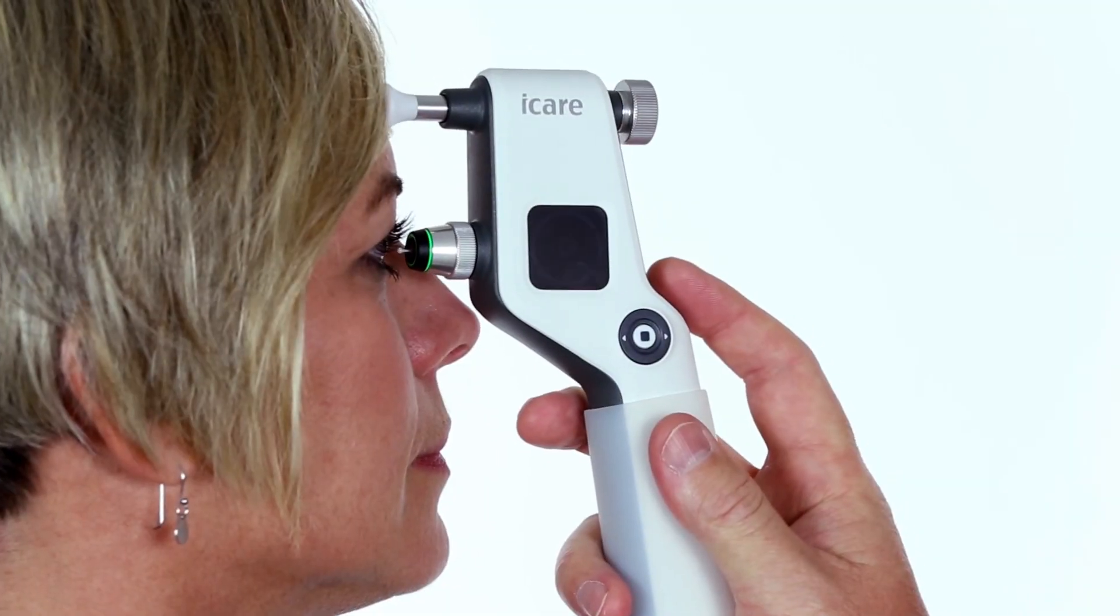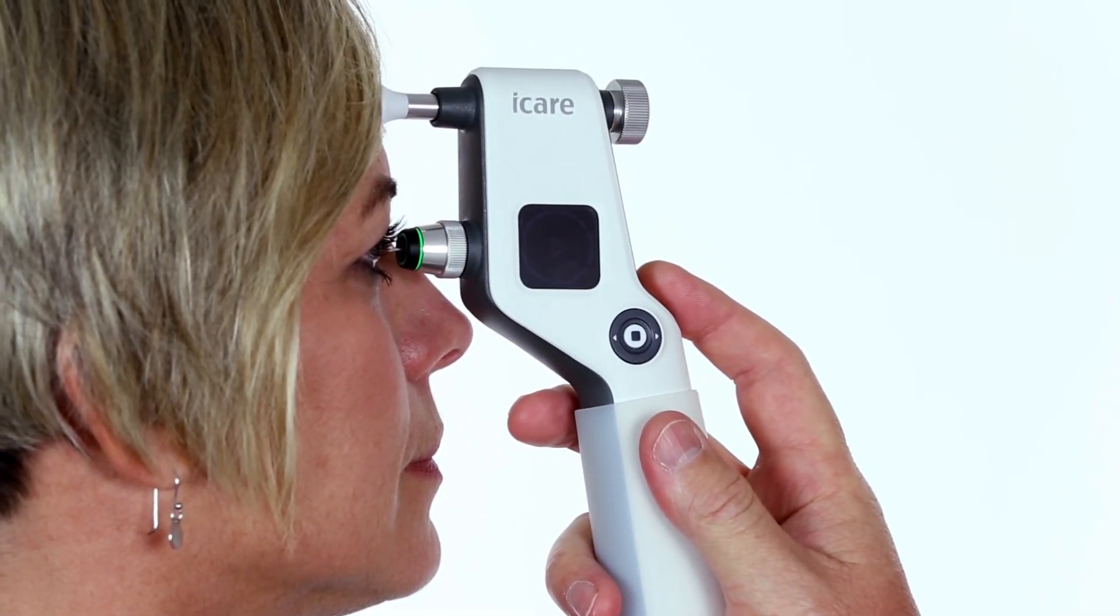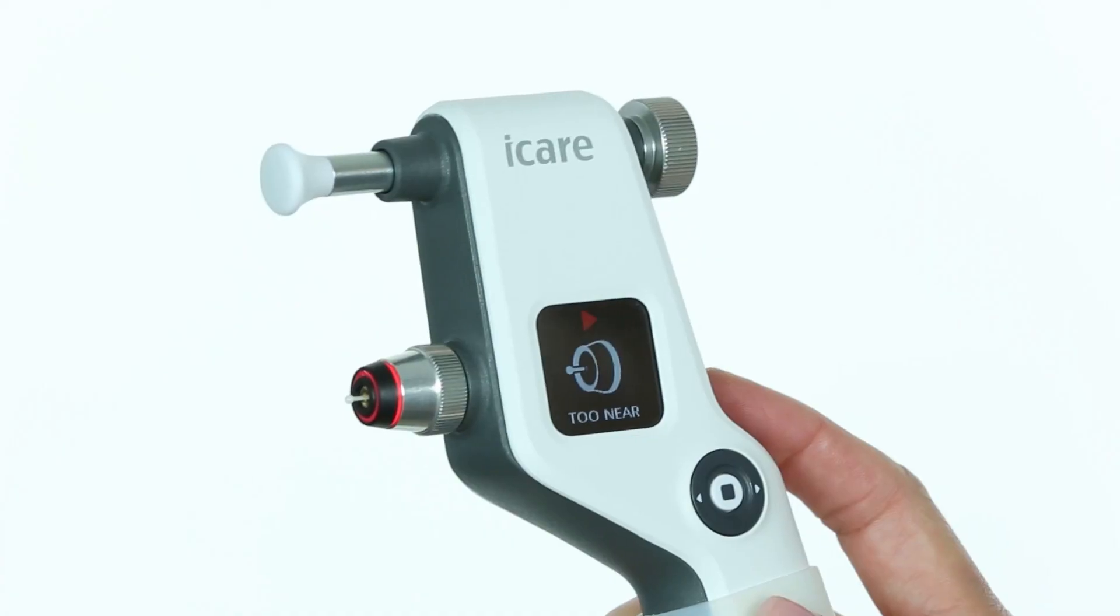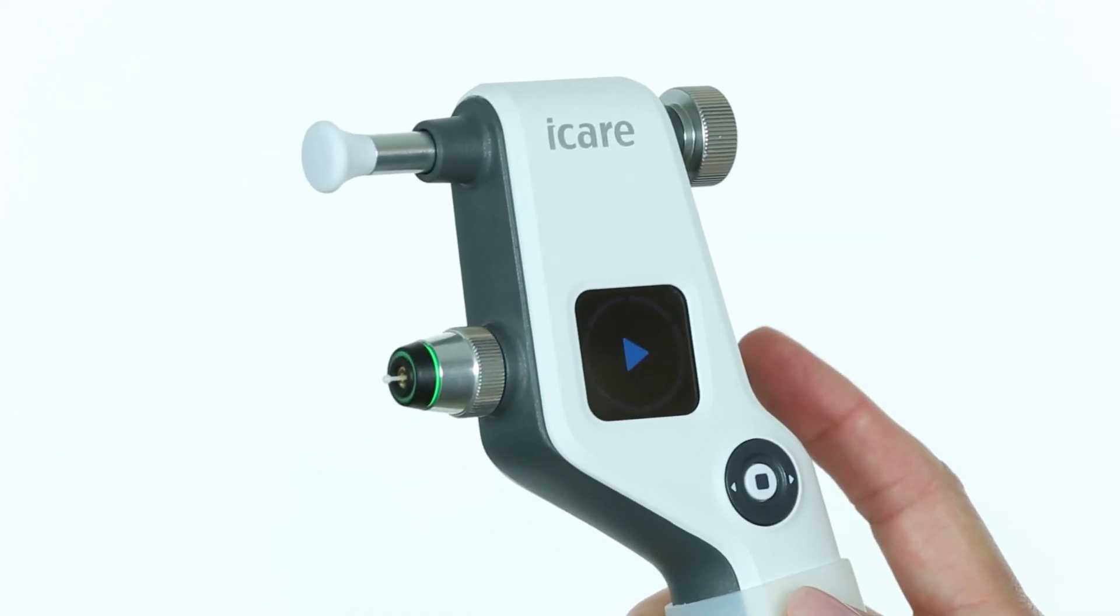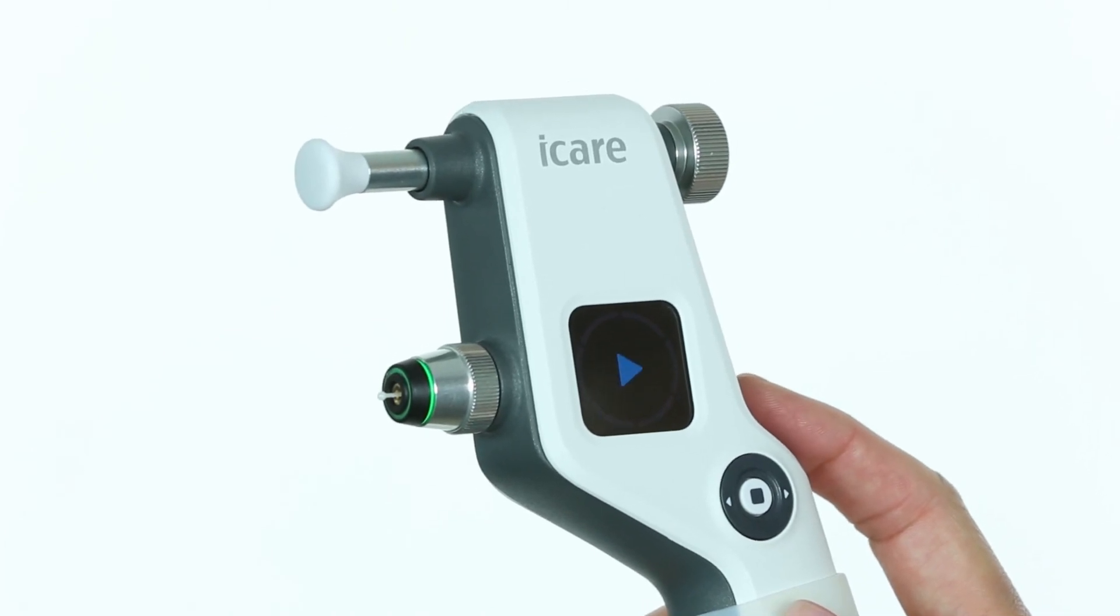Error messages: For example, if you are too close to the cornea, the too near error message will display and the probe base light flashes red. Clear the error message by pressing the measure button once.